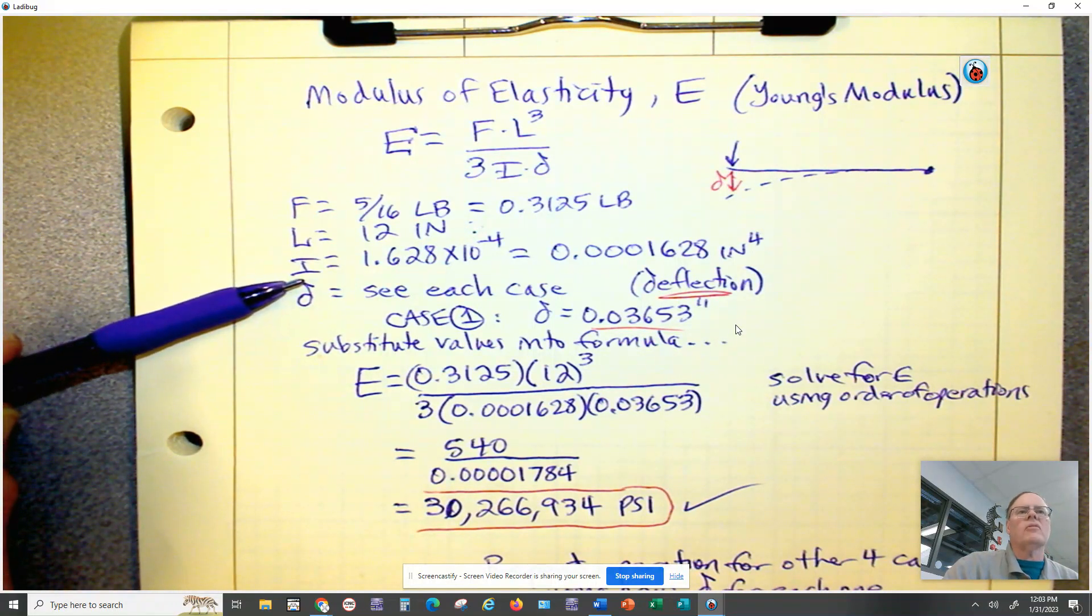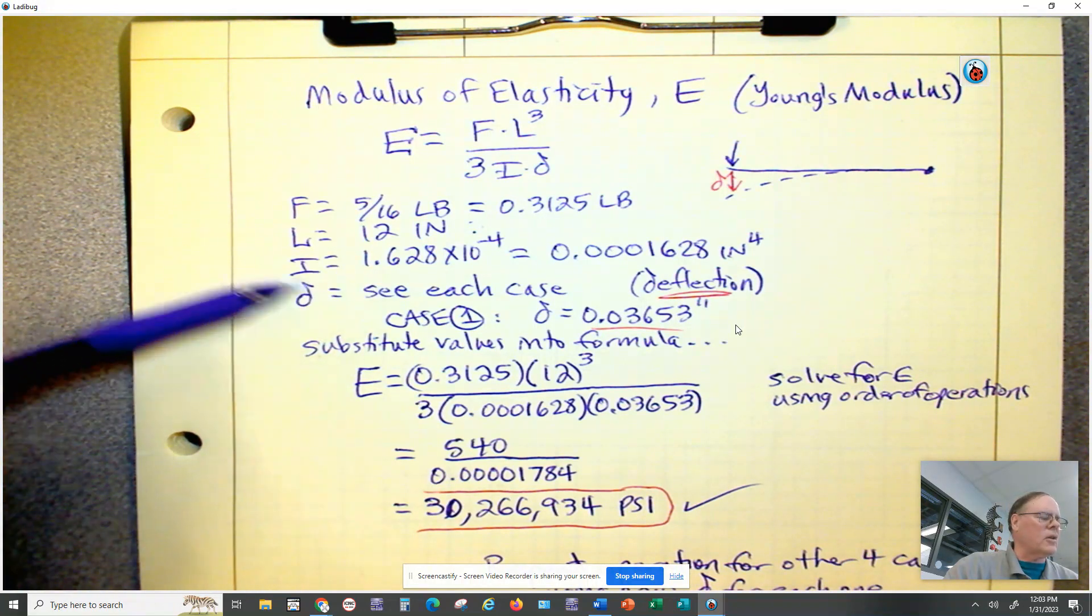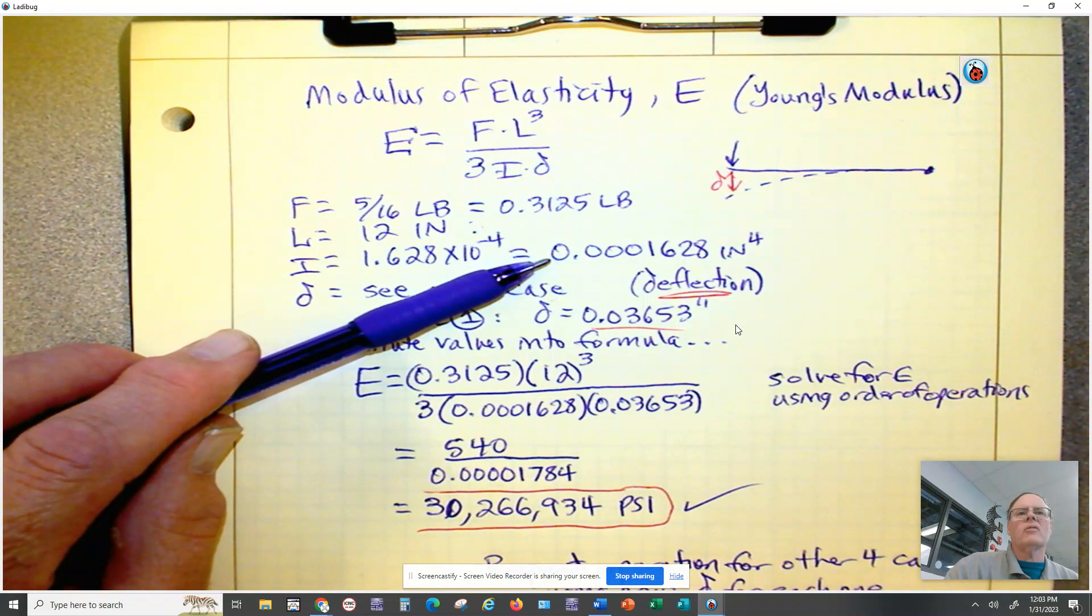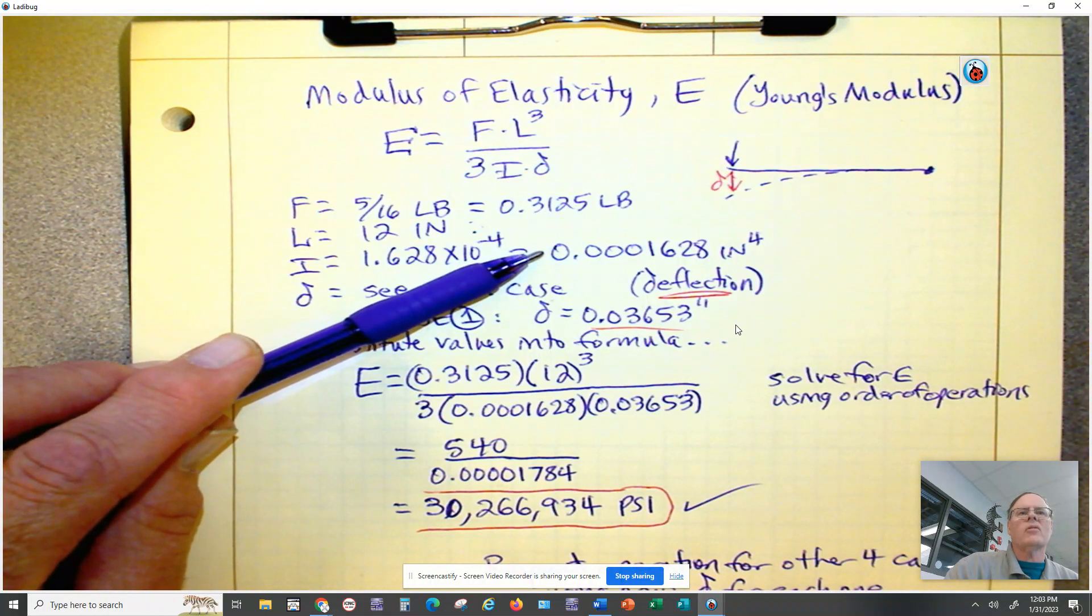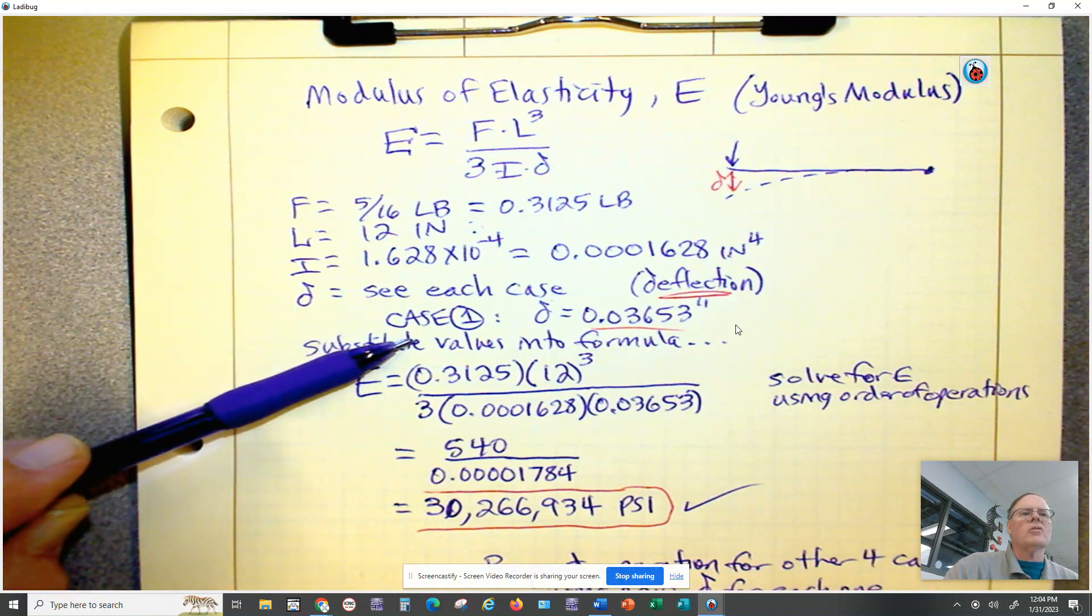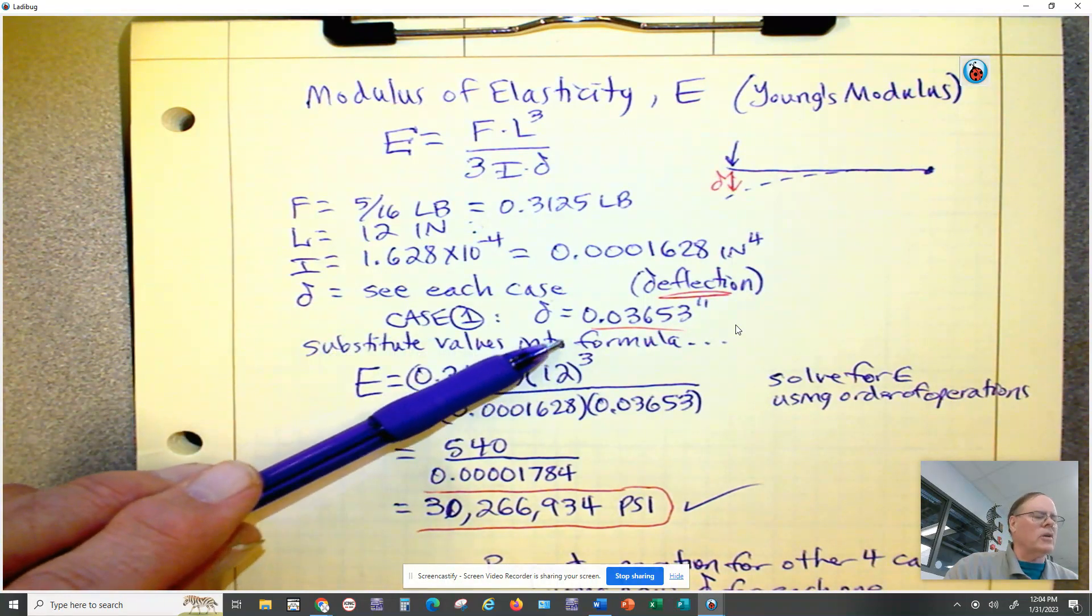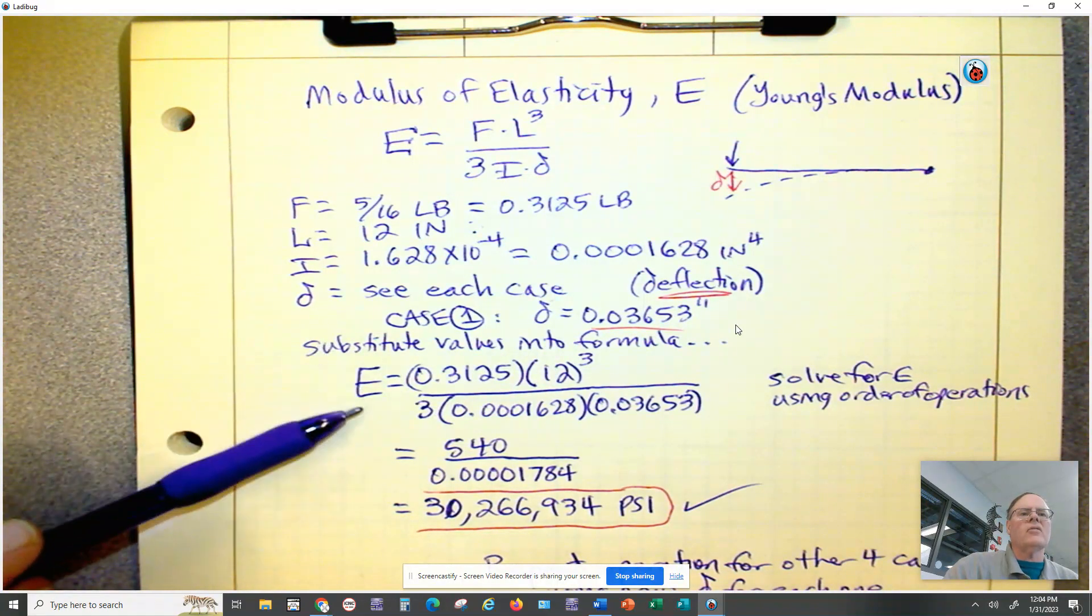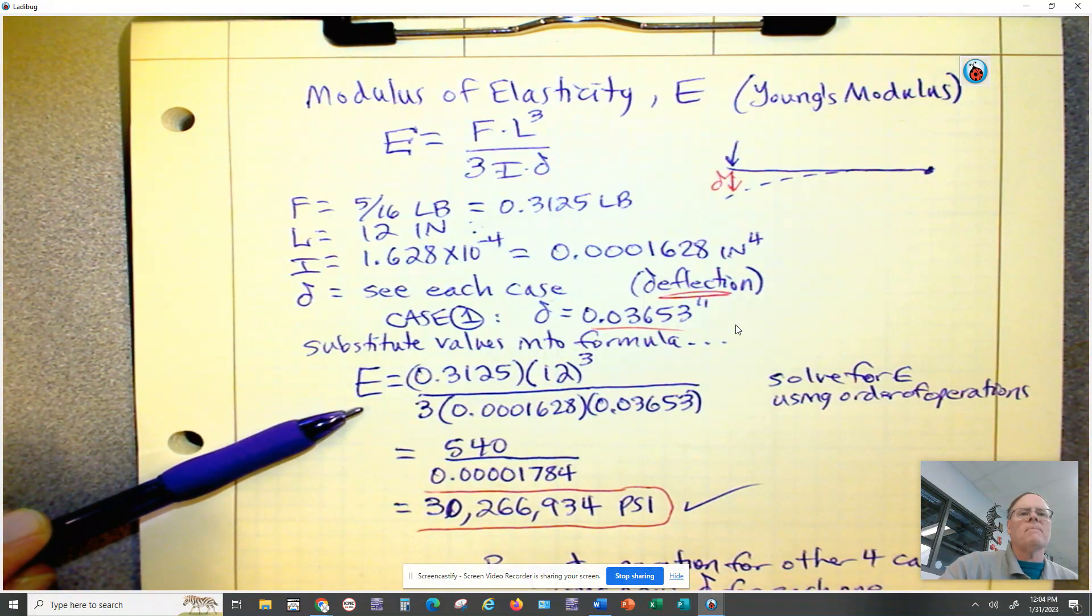The length is 12 inches. The I was 1.628 times 10 to the negative four. If we move the decimal four places to the left, we just get a regular decimal number, 0.0001628. So that's the number we'll actually use in the formula. We got to look at each case to get the deflection. So I chose case number one. Case number one has a deflection of this amount. We're going to substitute all these values into the E formula.